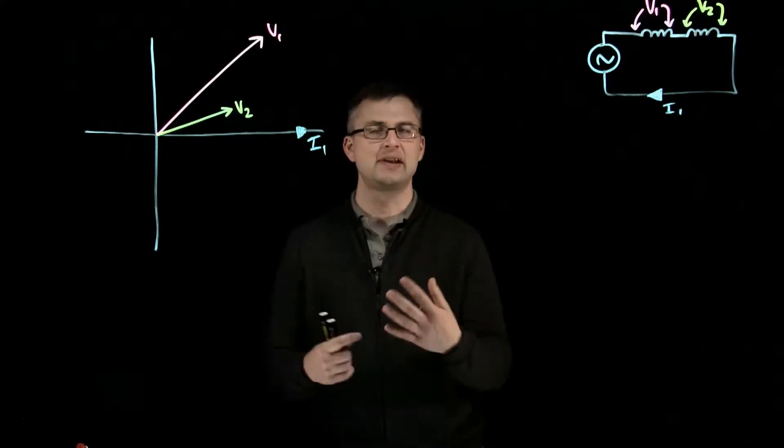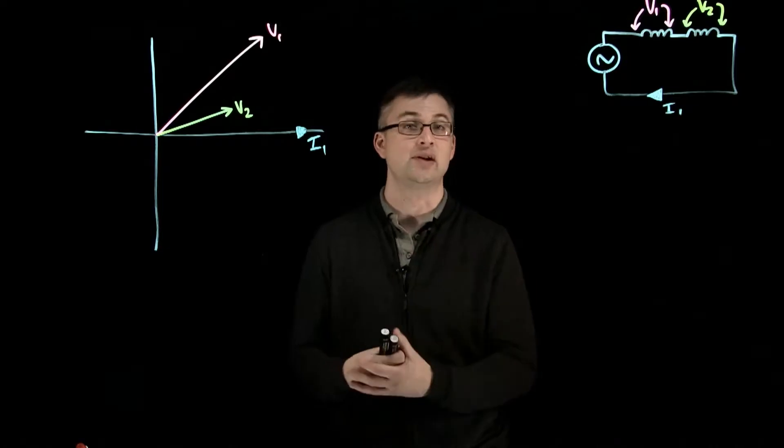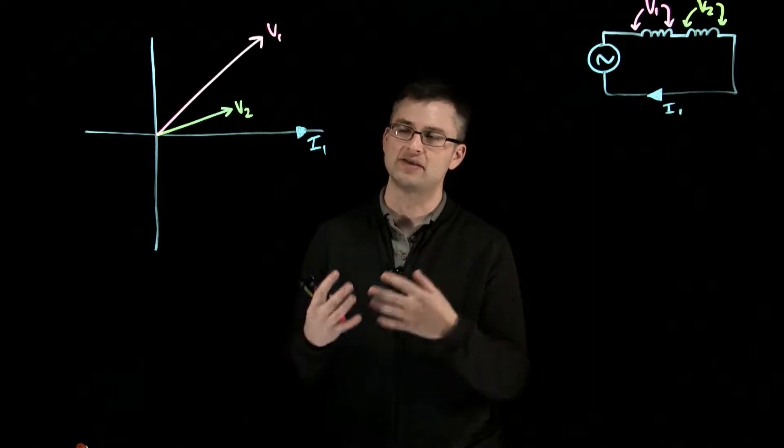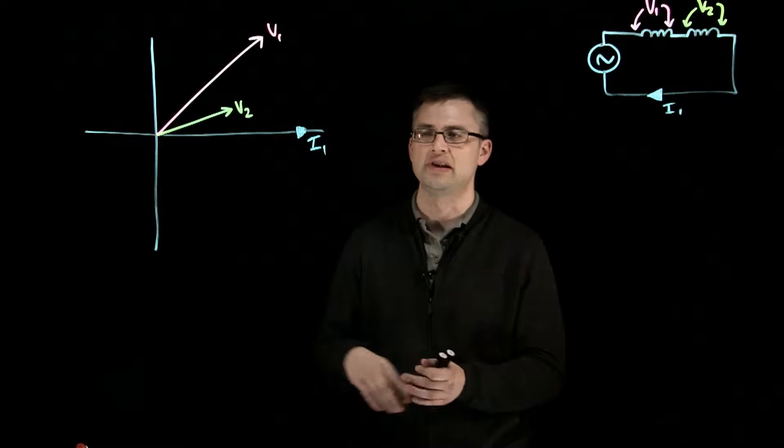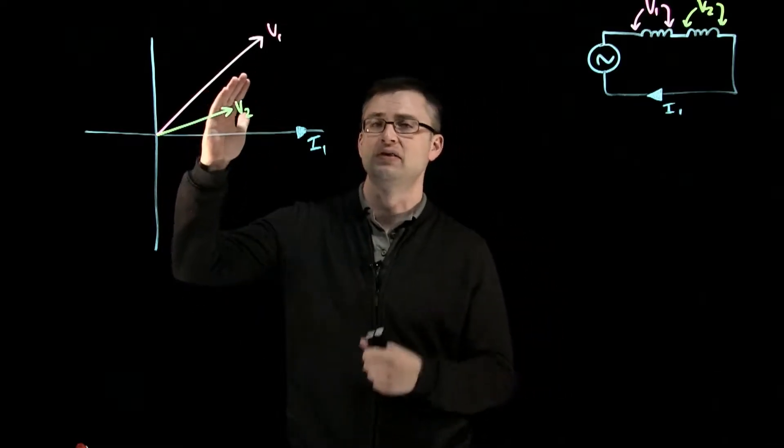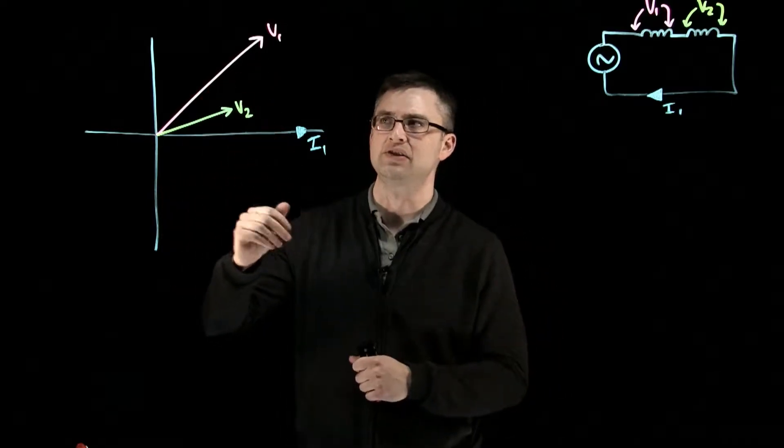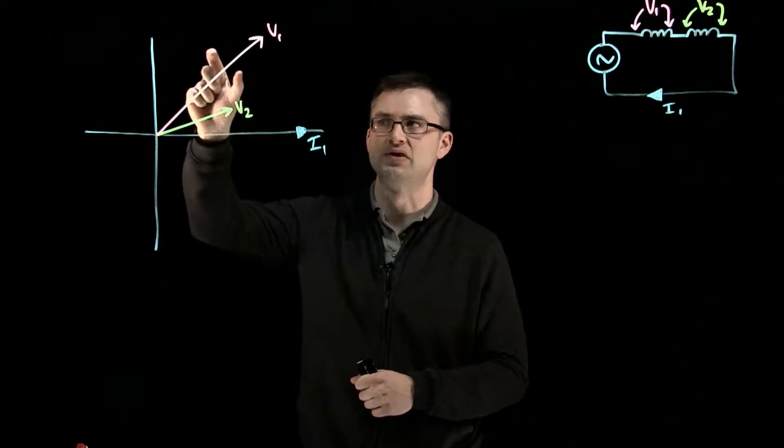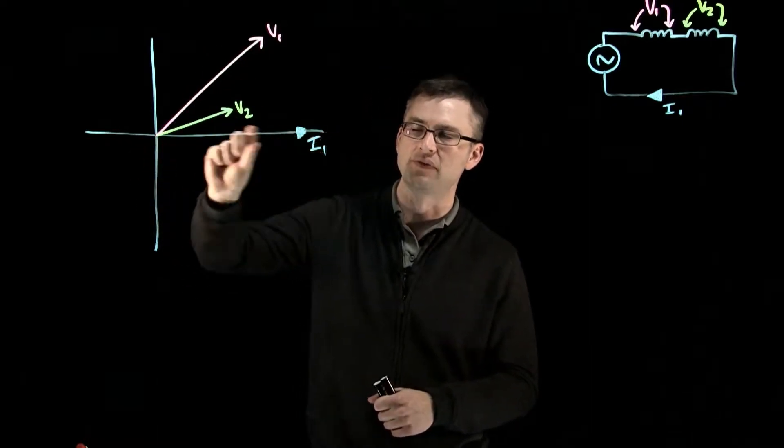So in this example, we're going to keep things very basic. We'll leave the numbers out of it for now and just see what's going on as a concept. So what I have here is basically three phasors. Two of them we're going to pay attention to: V1 and V2. So I've got two voltages. I've got current as a reference.